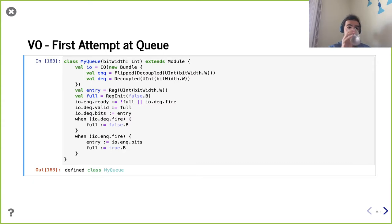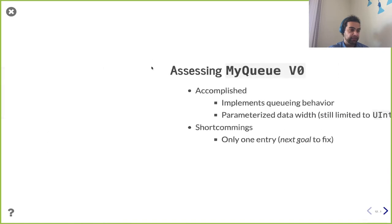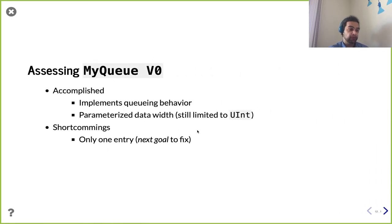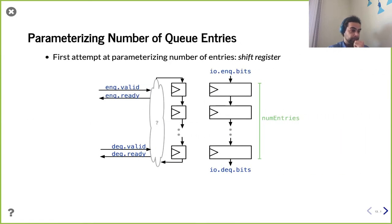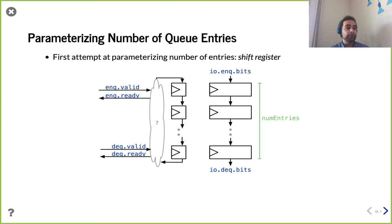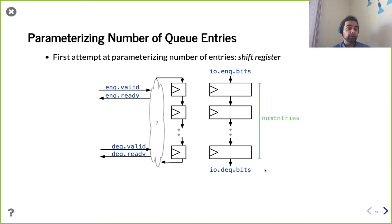So we built a single entry queue — that's our V0. We got a foothold: basic queuing behavior, parameterized data width, but limited to UInt. The biggest shortcoming is we only have one entry. As I said, the overhead is pretty minimal: just the register bits, one full bit, and a little combinational logic — a not gate, or gate, and gate, and some muxes. Not a ton of logic. Let's now go ahead and talk about being a little more flexible and parameterizing the number of queue entries.